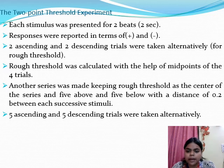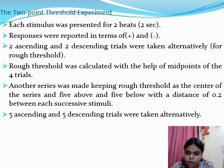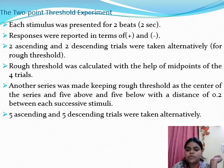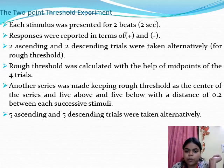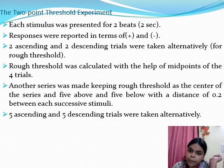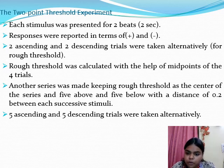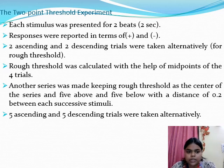Responses were recorded in terms of plus and minus signs. When the subject felt two points on the volar surface, the response was recorded as a plus. When the subject said they did not feel two points, a minus was recorded. For the rough threshold, a total of four trials were taken — two ascending and two descending, presented in alternate fashion: ascending, descending, ascending, descending. After that, the rough threshold was determined.